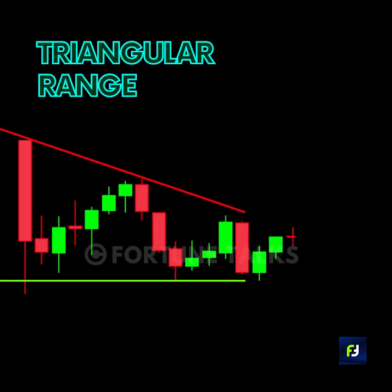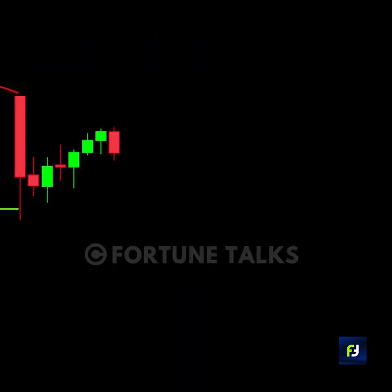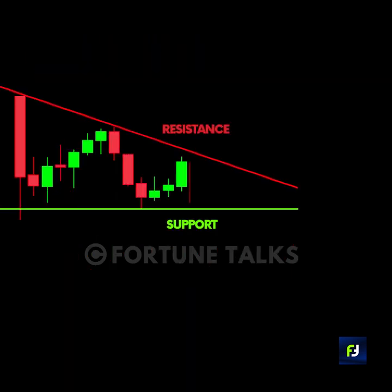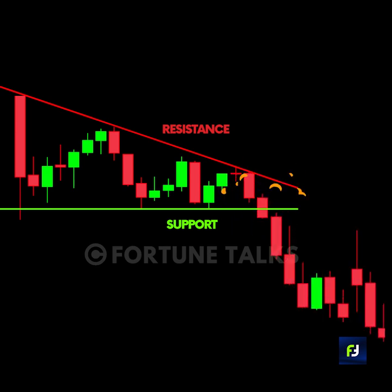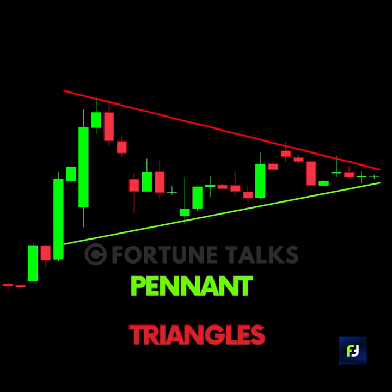The final type are the triangular ranges, where the price shrinks or expands between two converging or expanding levels or trend lines. Typical examples of this type are the triangles and pennants.